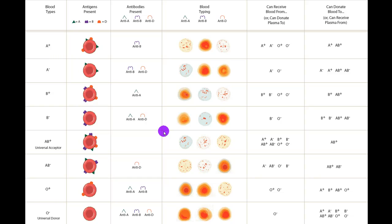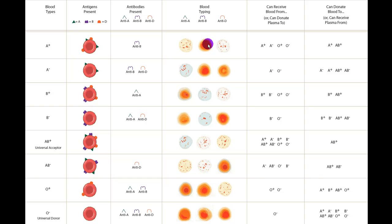A simple way to do blood typing is to recognize that if you put anti-A antibody on a cell that has the A antigen, it will cause agglutination — the blood will clump up because antibodies clump their targets together. So for A positive blood, anti-A will cause agglutination, anti-B will cause no agglutination, and anti-D will cause agglutination.